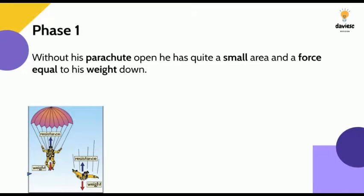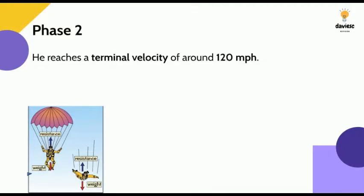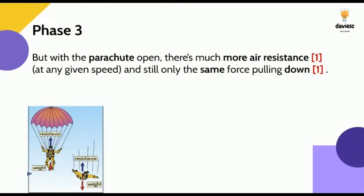So let's look at phase one: without his parachute open, he has a small area and a force which is equal to his weight down. Now the weight and resistance are exactly equal, meaning he will reach a terminal velocity of around 120 miles per hour. This is also worth one mark, as opposed to the last phase.